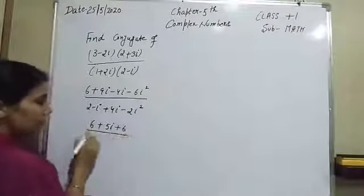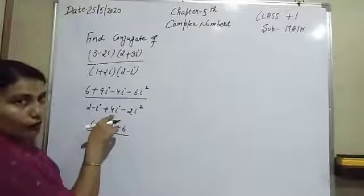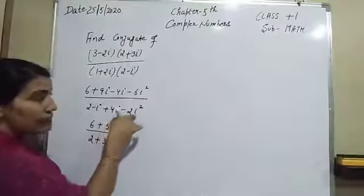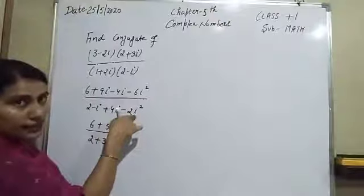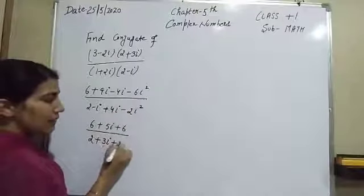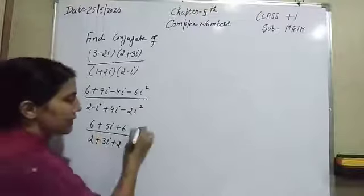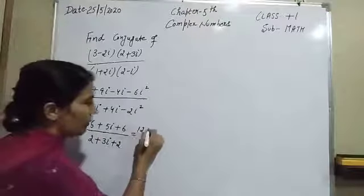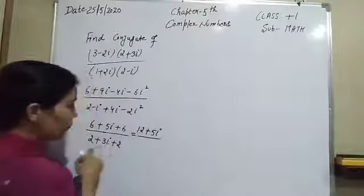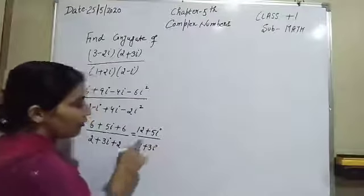In the denominator: 2, then minus eta plus 4 eta gives 3 eta, and the value of eta squared is minus 1, so minus minus gives plus 2. So the numerator becomes 6 plus 6, that is 12, plus 5 eta; and the denominator becomes 2 plus 2, that is 4, plus 3 eta.